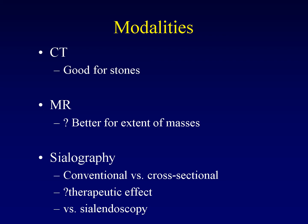How do we image the salivary glands? We can use several different modalities. CT is advantageous for identifying calculi, which are a common cause of inflammatory pathology in the salivary glands. MRI is often touted as better for establishing the extent of soft tissue masses, but this remains an unproven point in the literature. The most interesting modality — and the one unique to the salivary glands — is sialography.